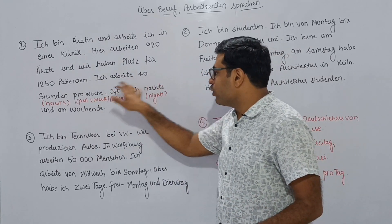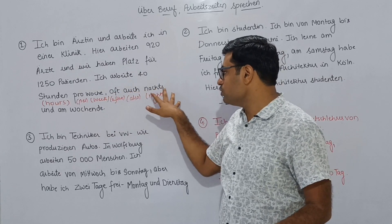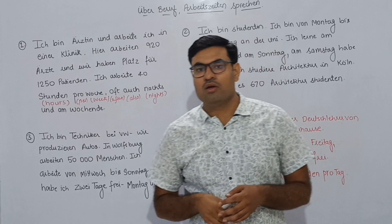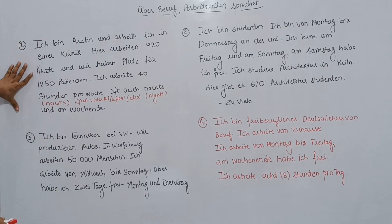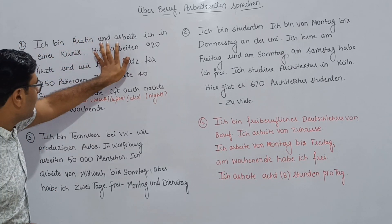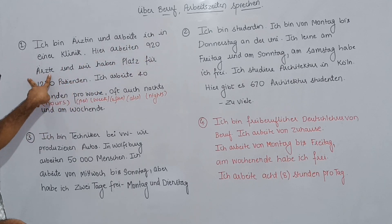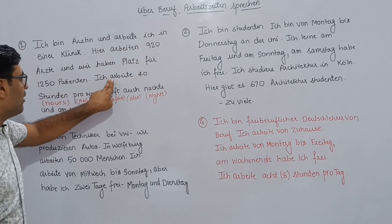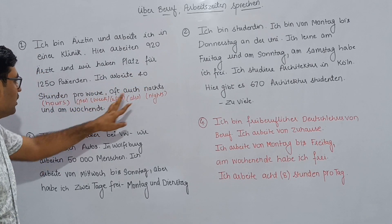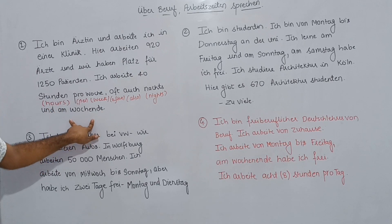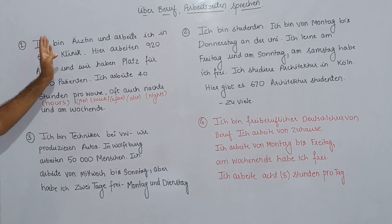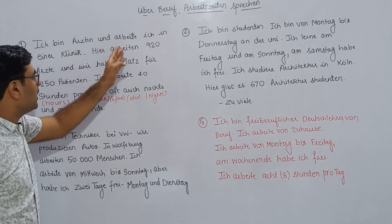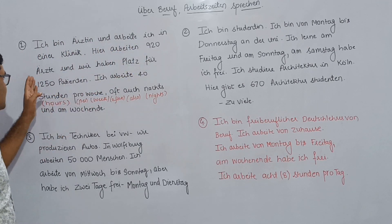Next: 'Oft auch nachts, und am Wochenende.' Oft means often, auch means also, nachts means nights, und means and, am Wochenende means on weekends. So: I work 40 hours per week — often also at nights, and also on weekends.